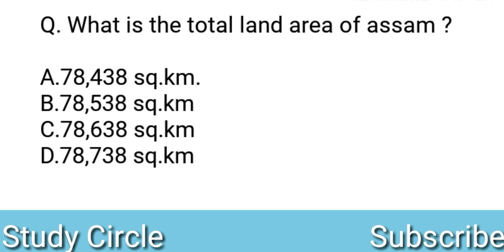What is the total land area of Assam? Aakha mor, to tell matikali ki maan? Option A: 78,438 sq km. Option B: 78,538 sq km. Option C: 78,638 sq km. Option D: 78,738 sq km. Answer: A — 78,438 sq km.